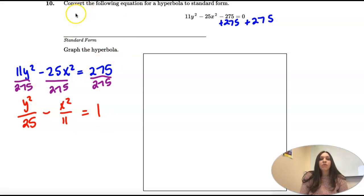Okay, so this is our standard form. Now we have to graph it. So our center is at 0, 0.